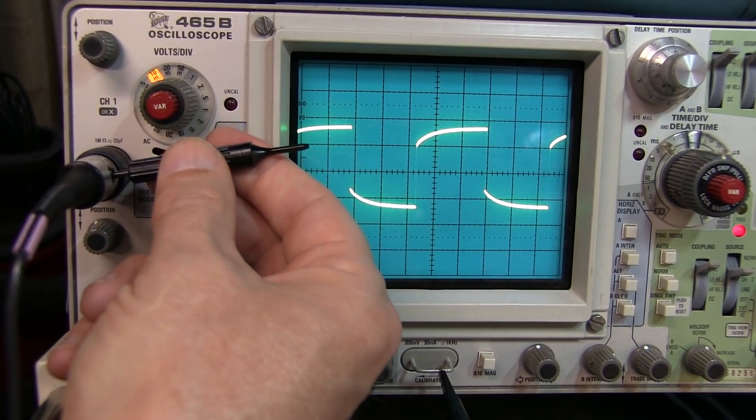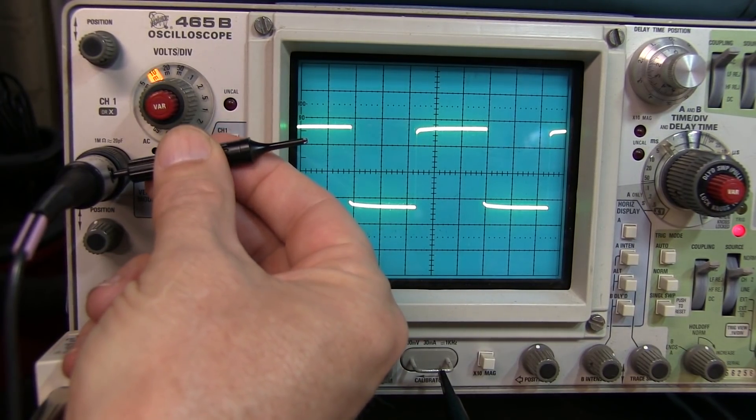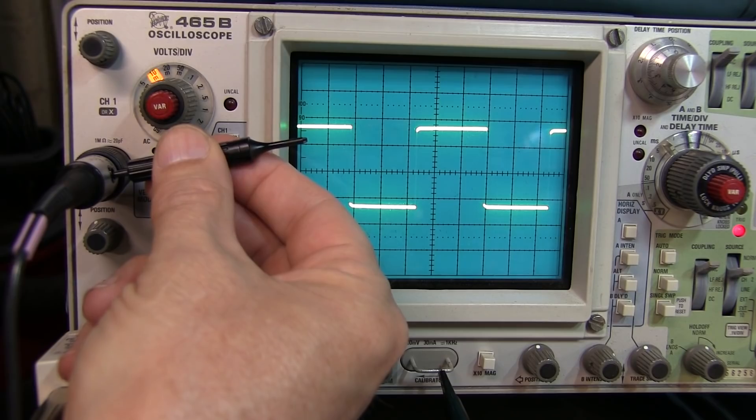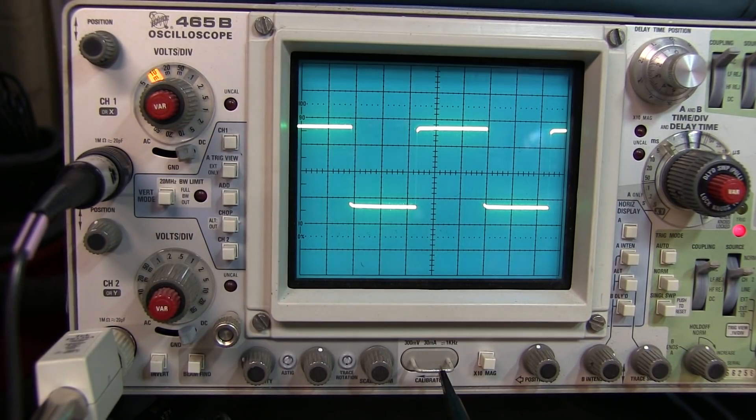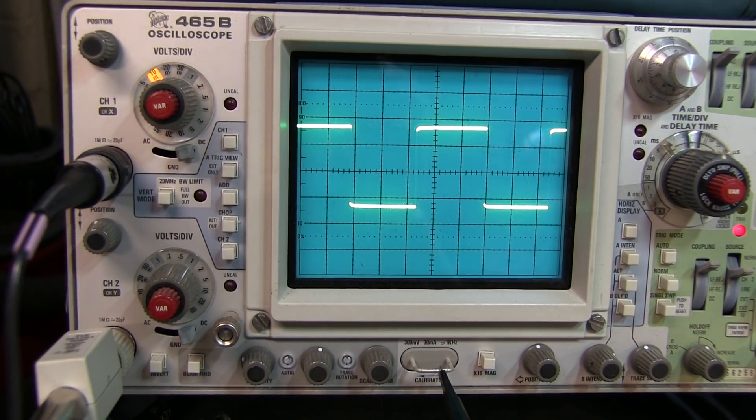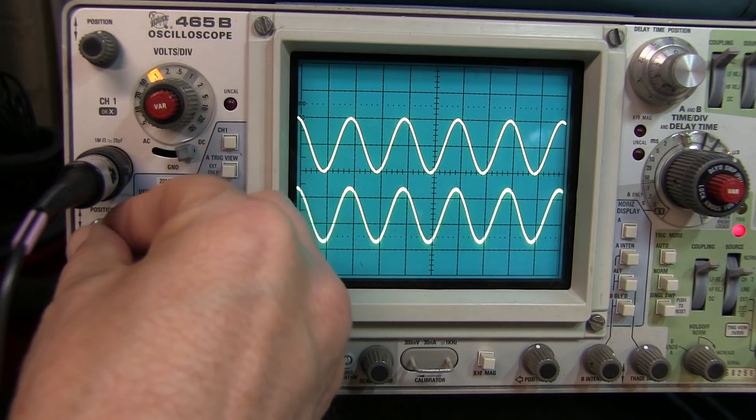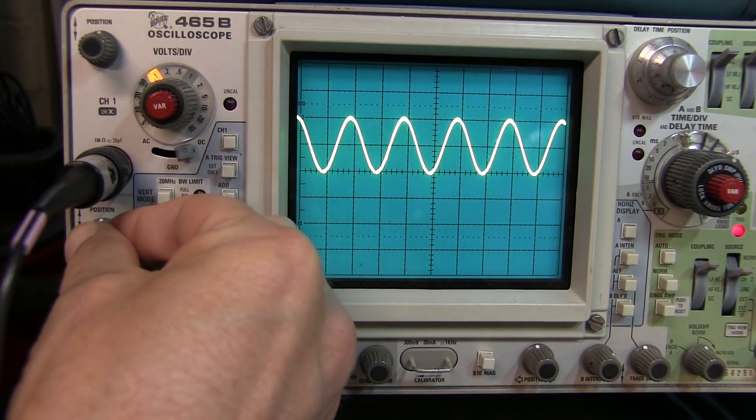By properly adjusting the compensation, you get a nice perfect square wave here. Now when we connect up to our 10kHz signal that we were looking at, we can see now that these two 10kHz signals are now at the same amplitude.